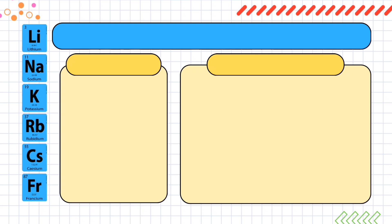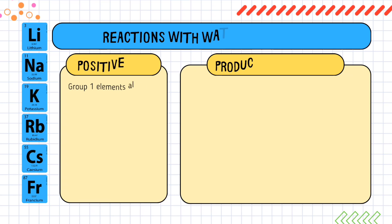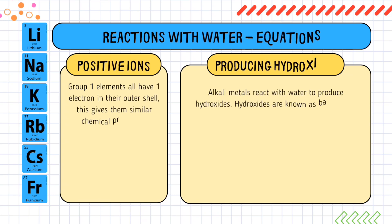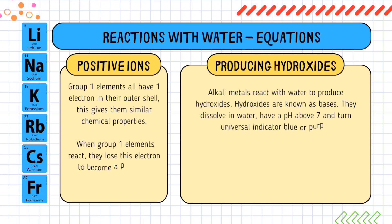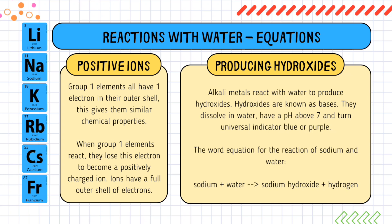Now we will study the reactions of alkali metals with water that produce equations. Group 1 elements all have one electron in their outer shell, which gives them similar chemical properties. When group 1 elements react, they lose their electron to become positively charged ions. Ions have a full outer shell of electrons. Alkali metals react with water to produce hydroxides, which are known as bases. They dissolve in water, having a pH above 7, and turn universal indicator blue or purple. The word equation for the reaction of sodium and water is: sodium plus water → sodium hydroxide plus hydrogen.